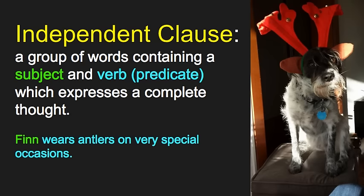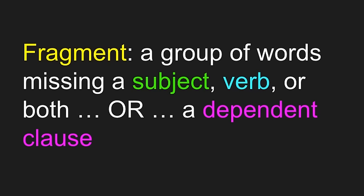The other type of clause is a dependent clause — a group of words containing a subject and a verb which does not express a complete thought. If we add one word, 'when,' we have a dependent clause: 'When Finn wears antlers on very special occasions.' You're waiting for something after that to finish the thought. We don't have it, and so we have one of the definitions of a fragment — it's a dependent clause.